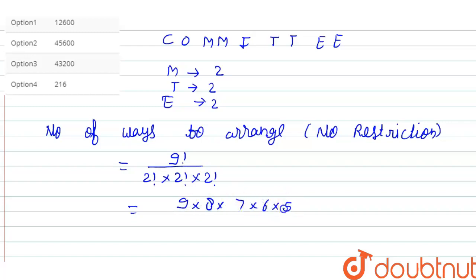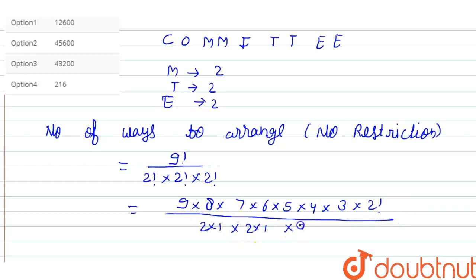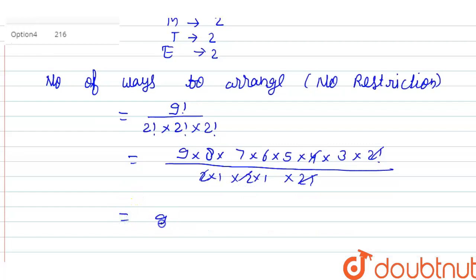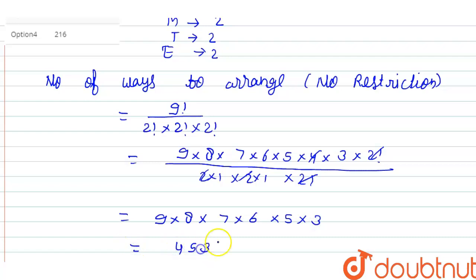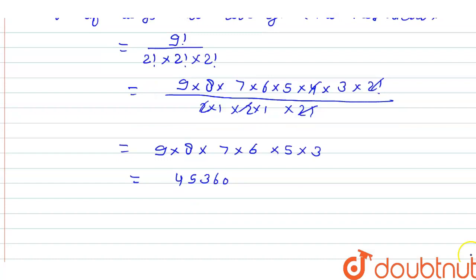This equals 9 × 8 × 7 × 6 × 5 × 4 × 3 × 2! divided by 2×1 × 2×1 × 2×1. The 2! cancels out, and 2 × 2 = 4 also cancels, leaving 9 × 8 × 7 × 6 × 5 × 3, which gives 45360.